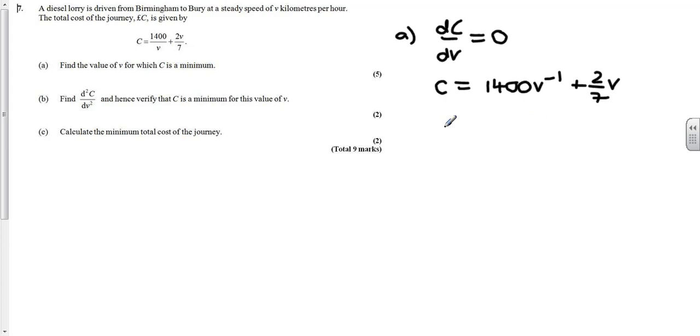So if we then differentiate, multiply by the power so we get minus 1 times 1400, and the power goes down by 1. And if we differentiate the second term, it just leaves us with a constant. Now to find what's the minimum, we're going to make it equal to zero. So zero is equal to, and I'm going to change the first term so it's over v squared now, and that's plus 2/7.